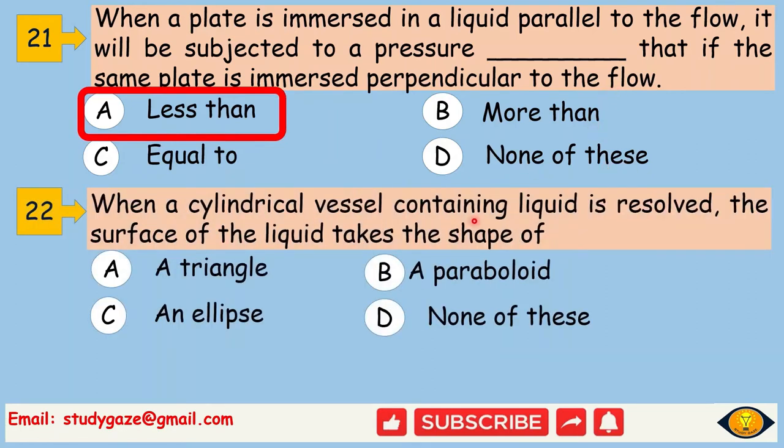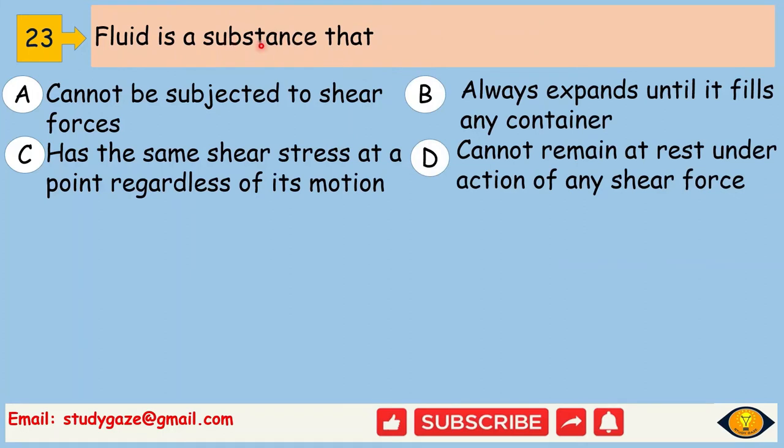When a cylindrical vessel containing liquid is resolved, the surface of the liquid takes the shape of a paraboloid. Fluid is a substance that cannot remain at rest under action of any shear force.